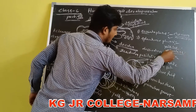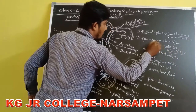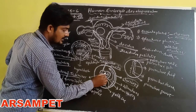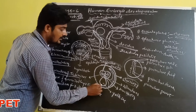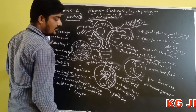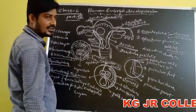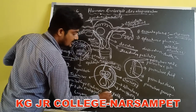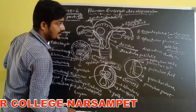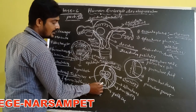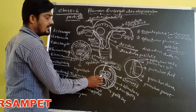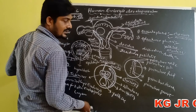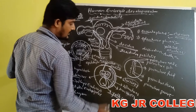The yolk sac forms from the evagination of the gut of the embryo. The yolk sac has no significance in human embryo development — it is filled with yolk but has no significance.